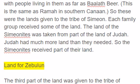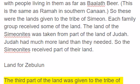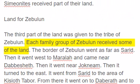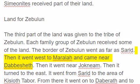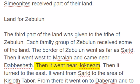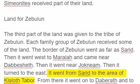Land for Zebulun. The third part of the land was given to the tribe of Zebulun. Each family group of Zebulun received some of the land. The border of Zebulun went as far as Sarid. Then it went west to Merila and came near Dabisheth. Then it went near Janiam. Then it turned to the east. It went from Sarid to the area of Kisloth-Tabor.